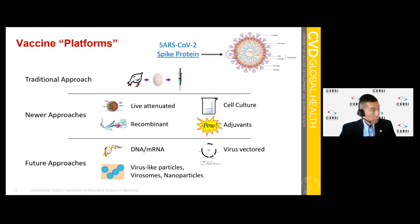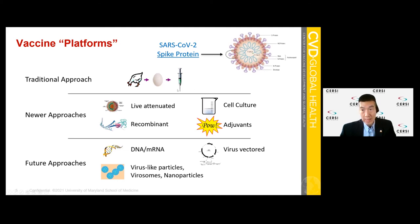We now have newer approaches. Live attenuated vaccines include FluMist — the live attenuated influenza vaccine — but also measles vaccine and yellow fever vaccine. We have recombinant protein approaches in which we take the antigen of interest and express it from recombinant expression through a bacterium of interest. We have cell culture-based technologies in which, instead of using a chicken's egg, we use cell culture techniques to replicate those viruses or pathogens to large amounts. We can also add immunostimulating adjuvants to our vaccines — Shingrix, a highly successful vaccine against shingles highly effective in older adults, is an example of how adjuvants have been very successful.